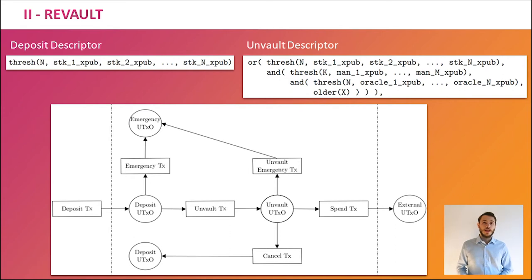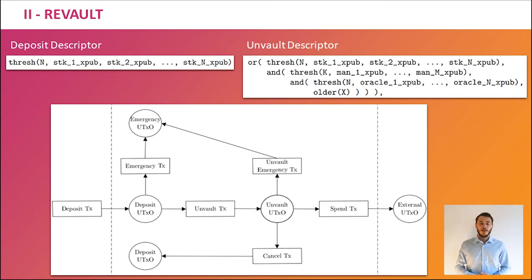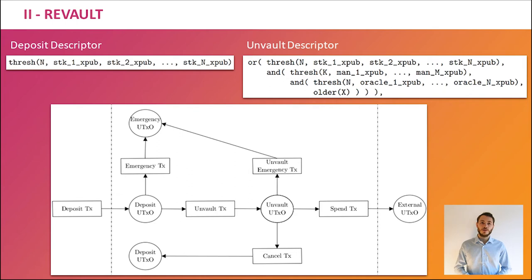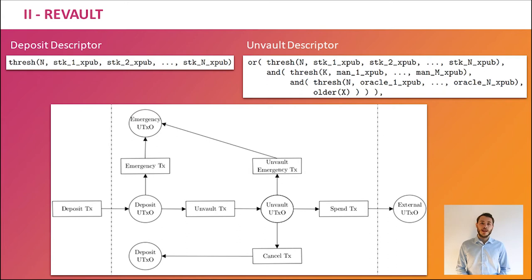The emergency descriptor could, for example, be an X-of-X multi-signature script among the N stakeholders and an additional X-minus-N other parties, such as insurance companies, security professionals, or family members. Each stakeholder wields a set of emergency transactions as a deterrent against physical threats. A panic button or a dead man switch could be used to broadcast these transactions, so an attacker would find it very difficult to attack stakeholders without triggering an emergency transaction broadcast. If triggered, an attacker loses the opportunity to steal deposited funds, and stealing funds from the emergency descriptor is by definition much more difficult. The expected payoff for an attack is significantly reduced.